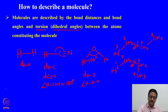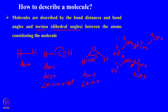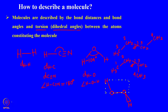To understand the torsion angle easily, consider hydrogen peroxide. In hydrogen peroxide, if we draw three atoms — one hydrogen and two oxygens — the fourth atom, the second hydrogen, comes at an angle. Two oxygens and one hydrogen are in the plane of the projection, while the other hydrogen along with the two oxygens is above the plane. The angle between these two planes is the dihedral angle — the angle about the O-O bond.